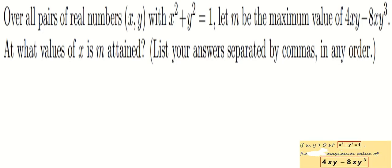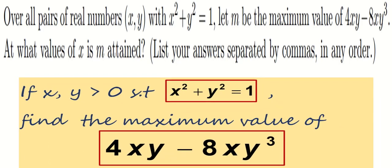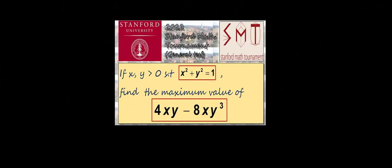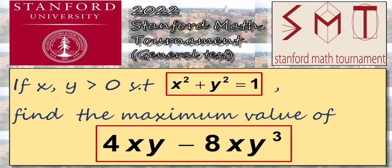Our main task here is to find the maximum value of 4xy minus 8xy cubed, and find the pair x, y at which the maximum value is attained. I'm going to use only AM-GM to solve this problem. Please have a good try before looking at the answer — pause the video now if you wish to solve it, and keep watching once ready.